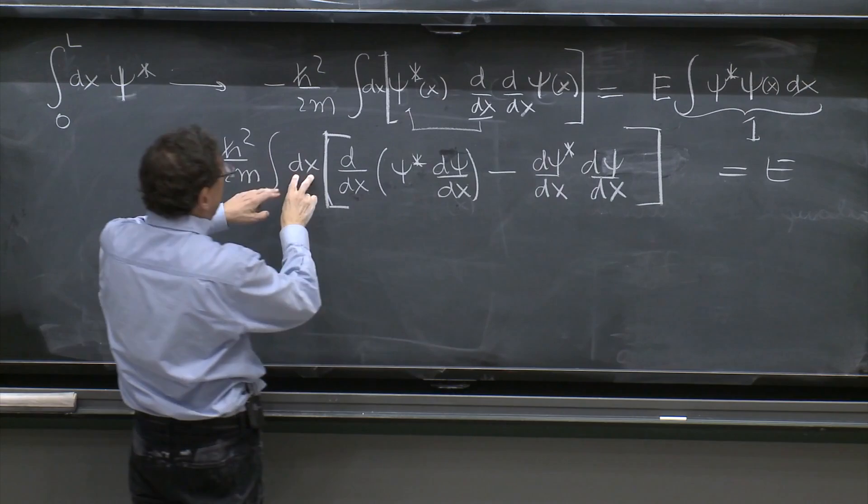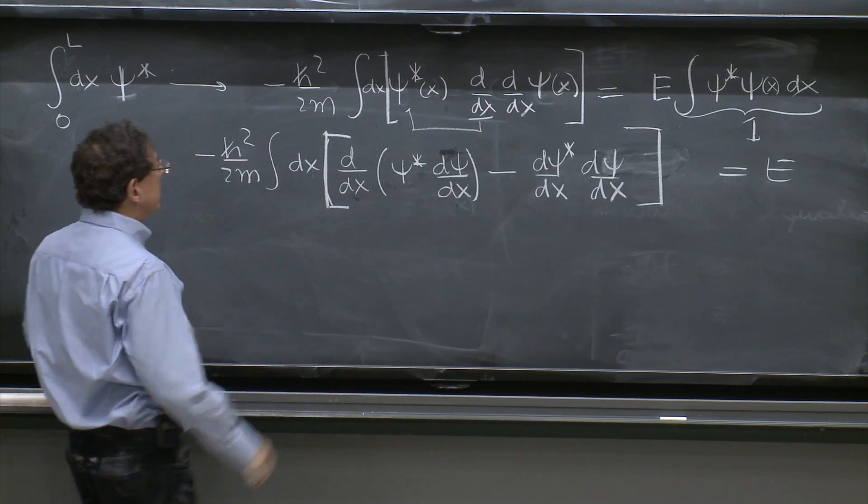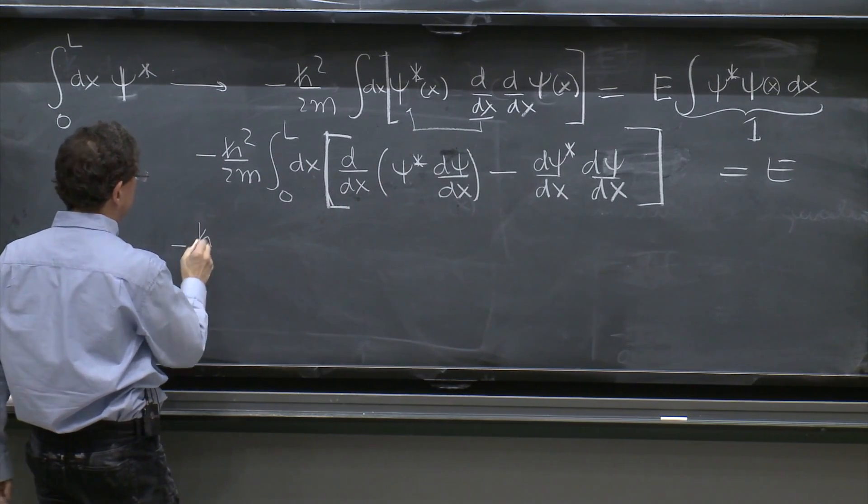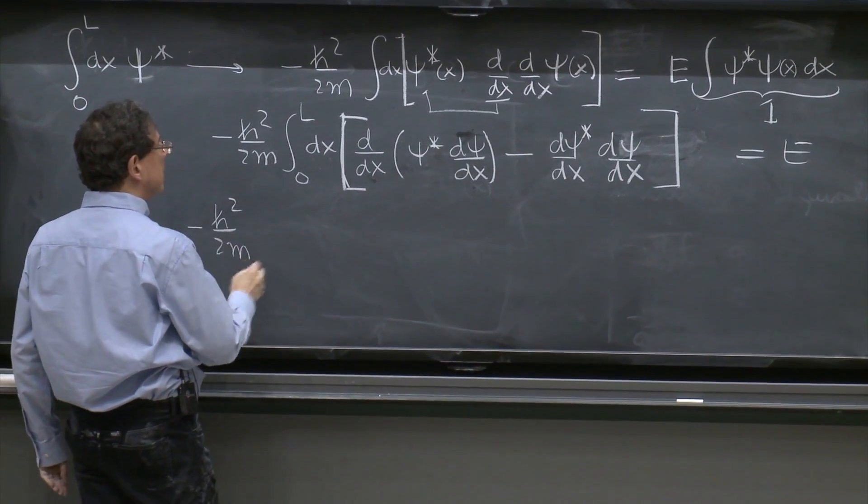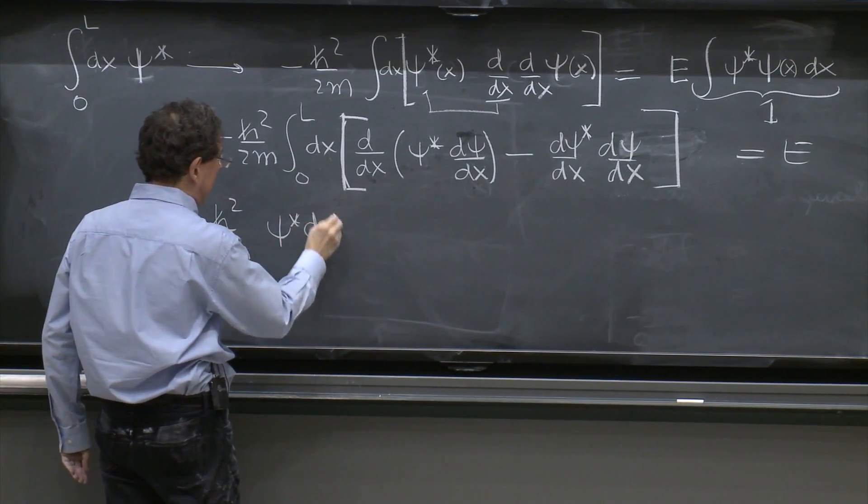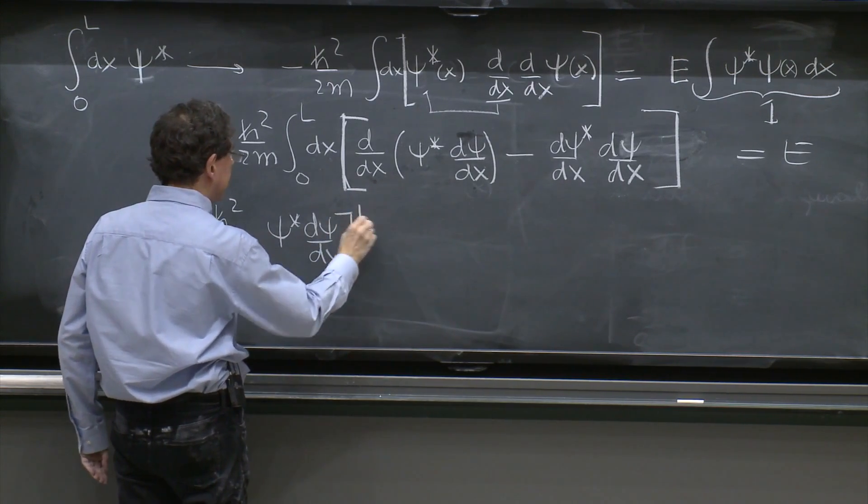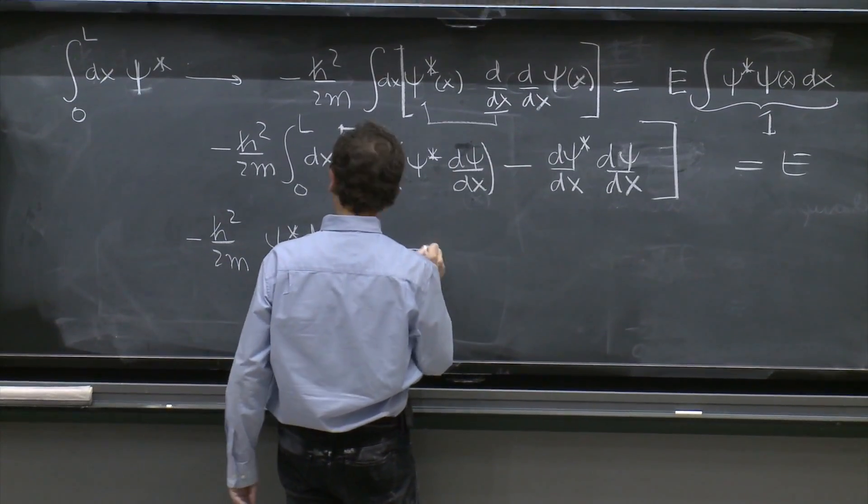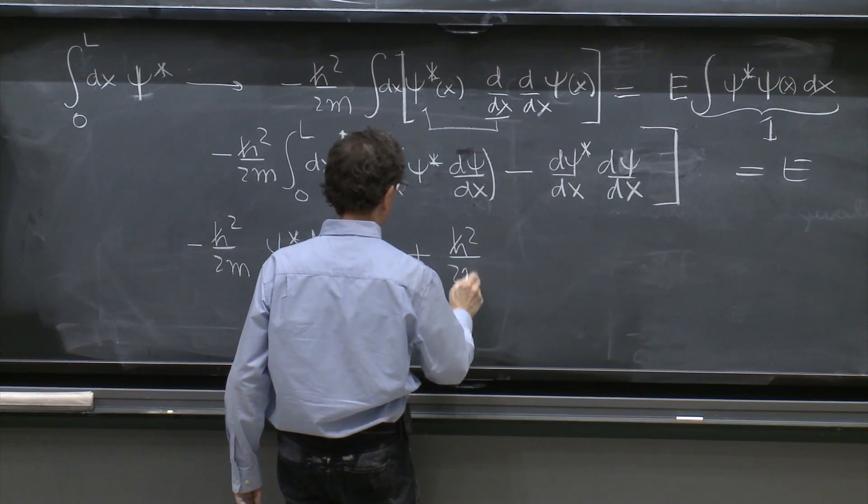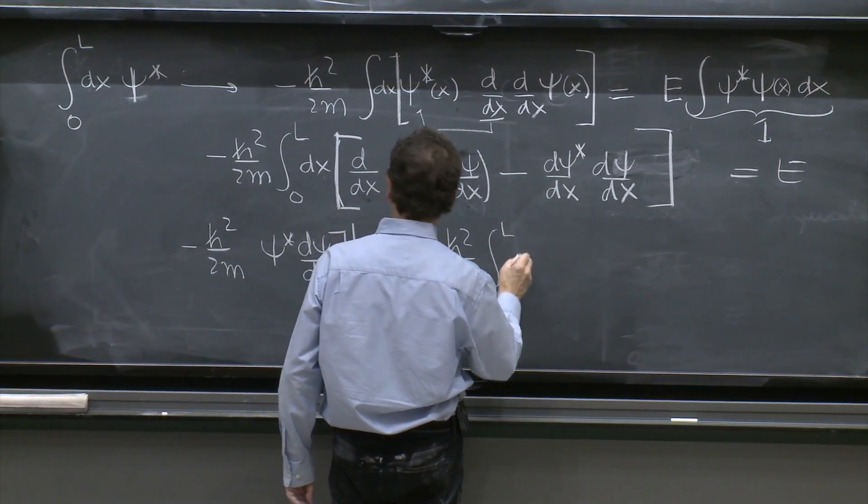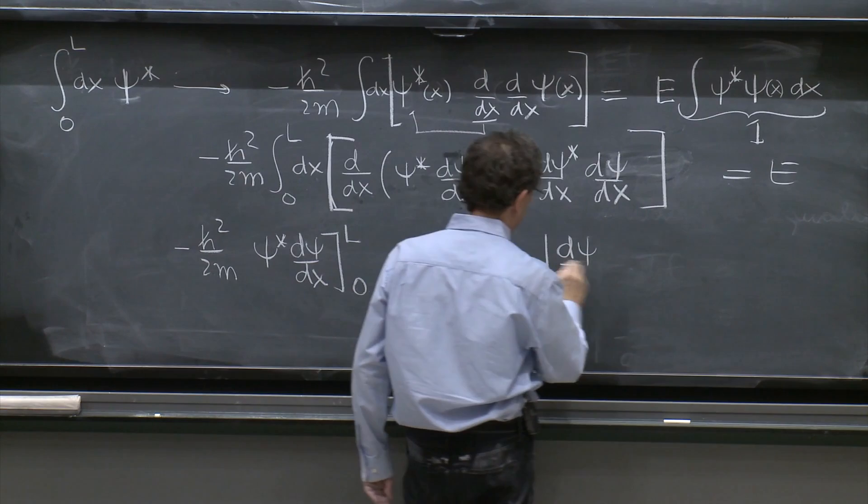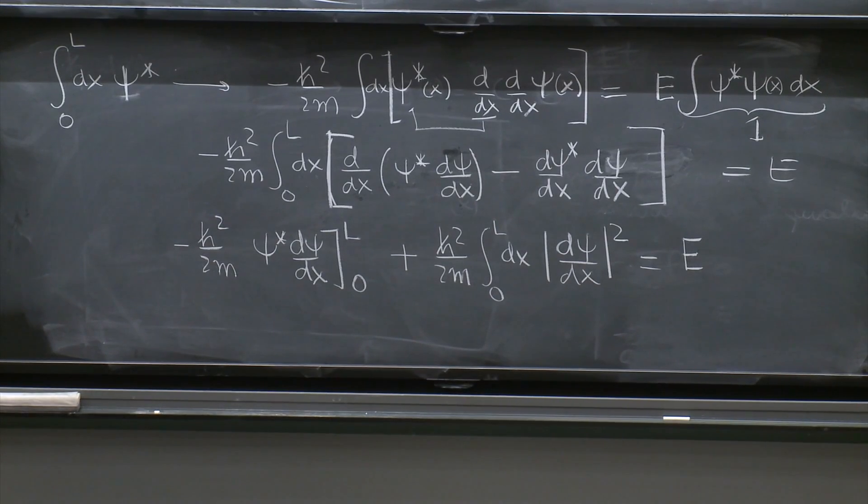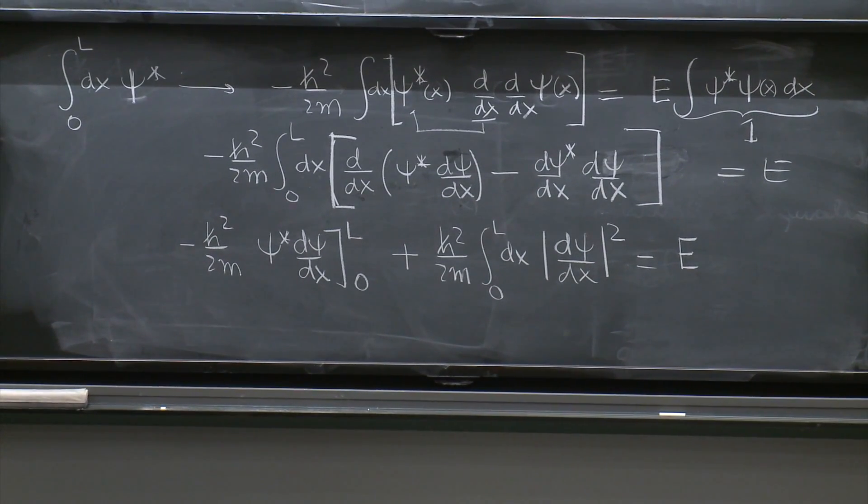Now, d/dx of something, if you integrate over x from 0 to L the derivative of something, this would be minus ℏ squared over 2m, ψ star dψ/dx evaluated at L and at 0. And then minus cancel, so you get plus ℏ squared over 2m, integral from 0 to L dx |dψ/dx|² equal E.